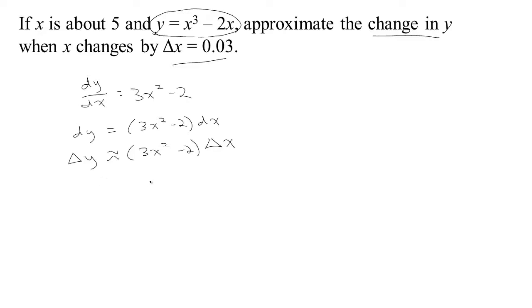What we need though is to figure out what actual value of the slope are we talking about. If we look at our derivative, dy/dx, and we evaluate it at 5, remember we're told that X is about 5, then we can get the approximate value of the slope. We plug in 5 here, 5 squared is 25, 3 times 25 is 75, 75 take away 2 is 73, so the slope is approximately 73.